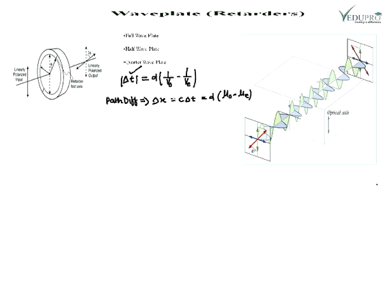We know that μ₀ and μₑ are the refractive indices of the ordinary and extraordinary rays. This path difference Δx is created between the two mutually perpendicular vibrations. For this reason, the crystal plate is called a phase retardation plate.